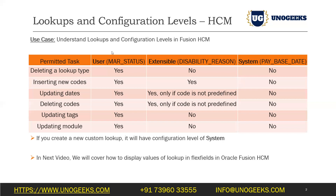One way to capture the tax rate is to hard-code it in the BIP report query in the data model. If you do it that way, tomorrow if the tax rate changes the client will have to find a Fusion technical consultant to come in and edit the data model. But if you capture it in a lookup, the client can help themselves — whenever the tax rate changes they just go to the lookup and change it, and the BIP report will pull the latest value from the lookup.